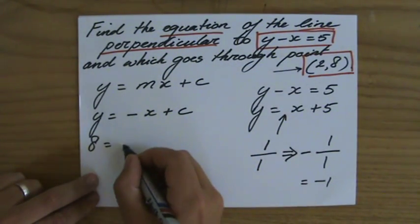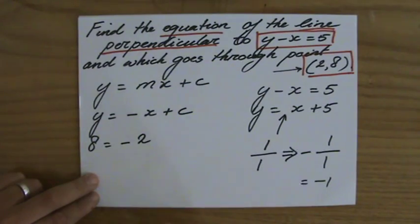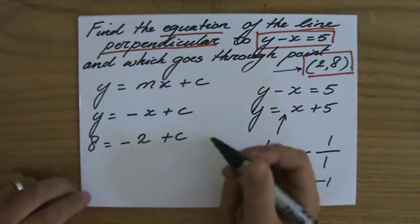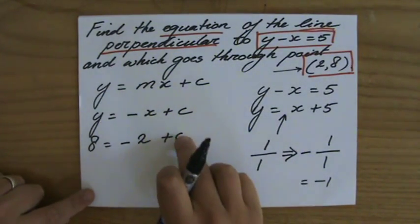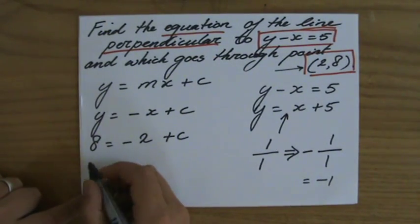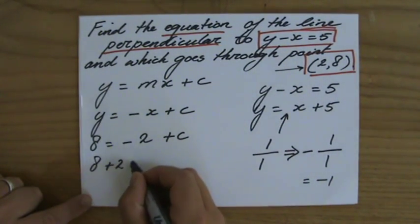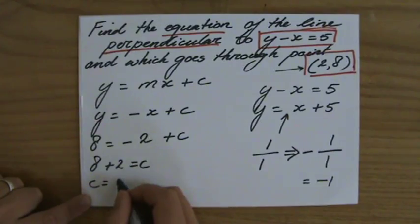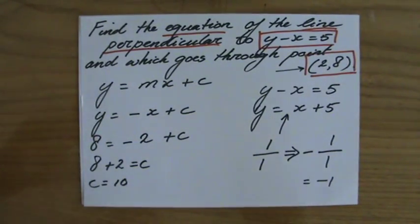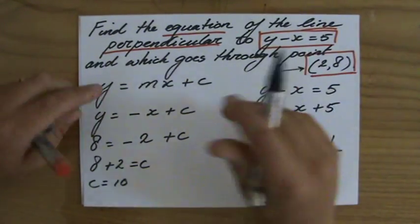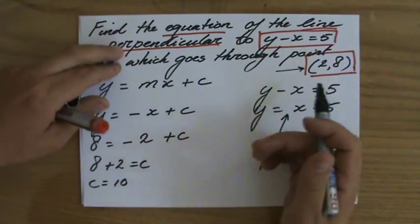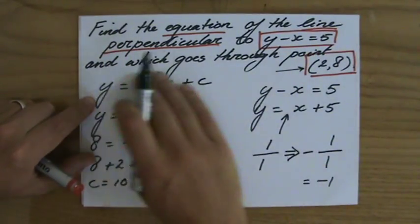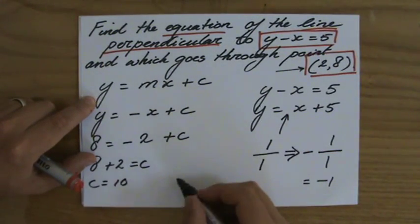One equation, one unknown, I can solve that. 8 equals minus 2 plus c, so 8 plus 2 equals c which is 10. So the equation of the line which is perpendicular to y minus x equals 5 and which goes through point (2,8) is the equation y equals minus x plus 10.